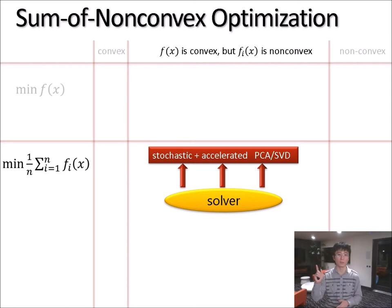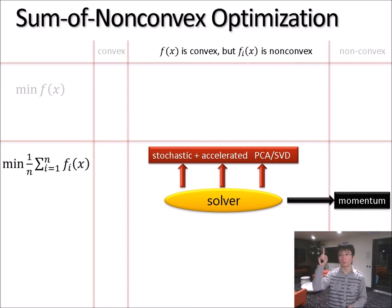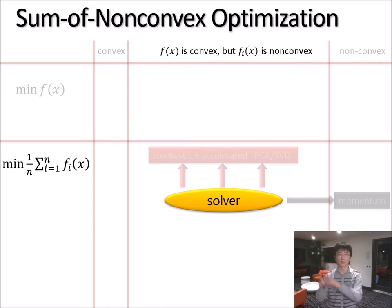I claim that this class of problems is extremely important for at least two reasons. First, all known versions of stochastic and accelerated methods for PCA, SVD, and essentially eigen-related problems, all of those methods rely on repeatedly solving a sum of non-convex objectives. More interestingly, the only known momentum method for the fully non-convex world also relies on repeatedly solving an objective that is convex, but each f_i is non-convex. Therefore, if we can get an efficient and practical solver here, they also imply better solvers for subsequent tasks.